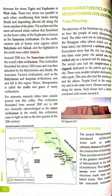The discovery of the Sumerian city of Ur tells us how the people of early Mesopotamia lived. The cities were not as well planned as the Harappan city, about which you will learn later, but they followed a uniform pattern — meaning the buildings followed a similar model or design.